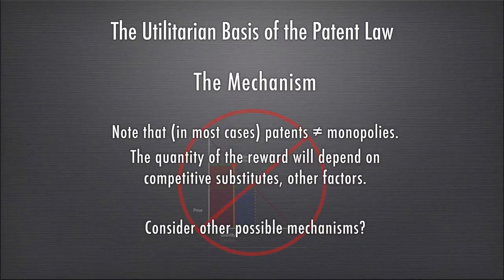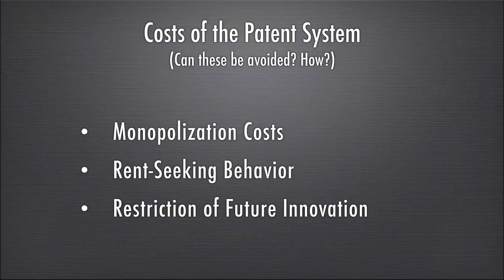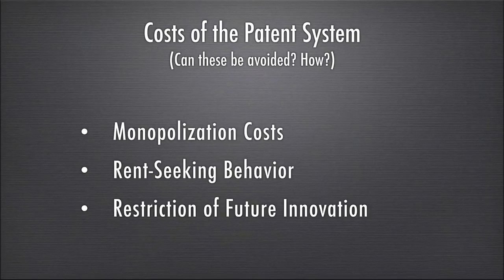There are obviously other possible mechanisms for creating the incentives we get out of the patent system, but there are also important costs. The monopolization costs include deadweight loss related to higher prices, and potential rent-seeking behavior — if you offer incentives for people to get more money by inventing things, they will engage in invention even when maybe they shouldn't, doing things primarily to try to gain patents rather than to do things good for society. Patents might also restrict future innovation — if I have a patent on generation one of the iPhone, have I restricted other companies' ability to create versions two, three, and four?